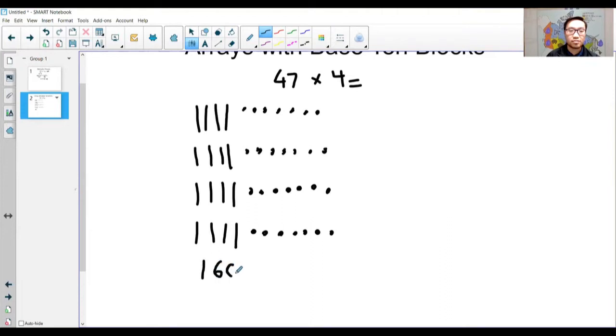So, I have 160, and then I have 7, 14, 21, 28 ones. If I add these together, I get 188.